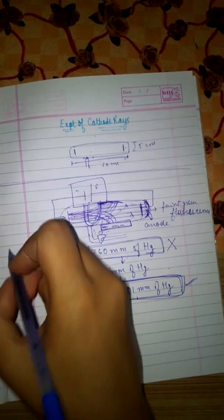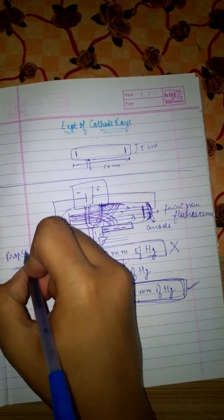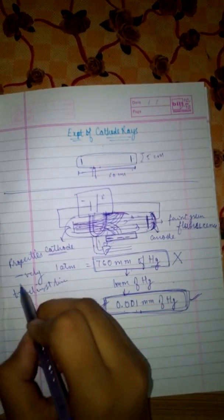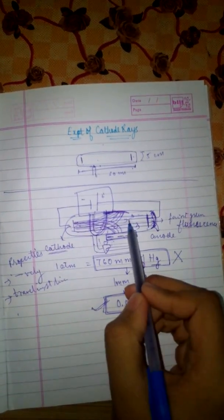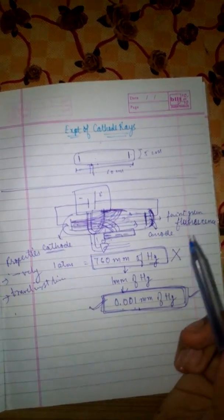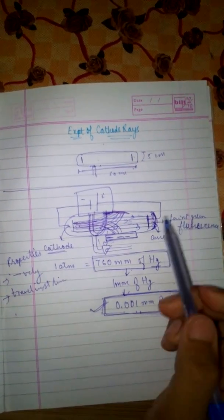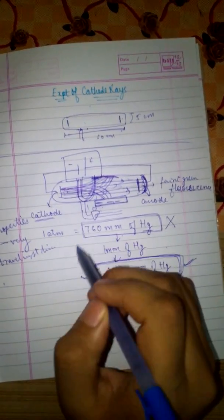These are the properties of the cathode rays: they are negatively charged, travel in a straight line, they travel with speed approximately equal to the speed of light. So this was the experiment of cathode rays.